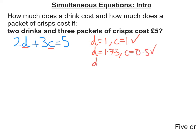And actually, let's put another one down. We could have that D, the cost of a drink, is 25p, and C, the cost of a packet of crisps, is £1.50. That would also work. And there's going to be many, many other combinations.